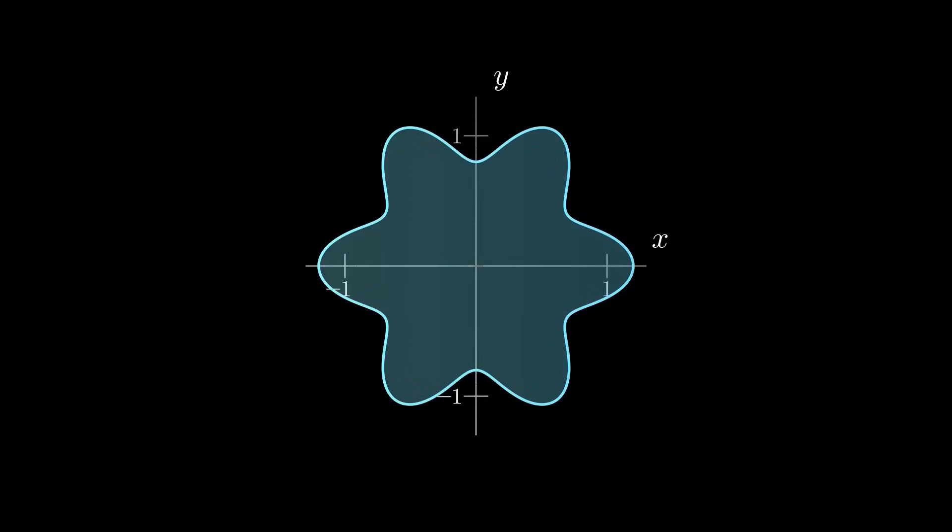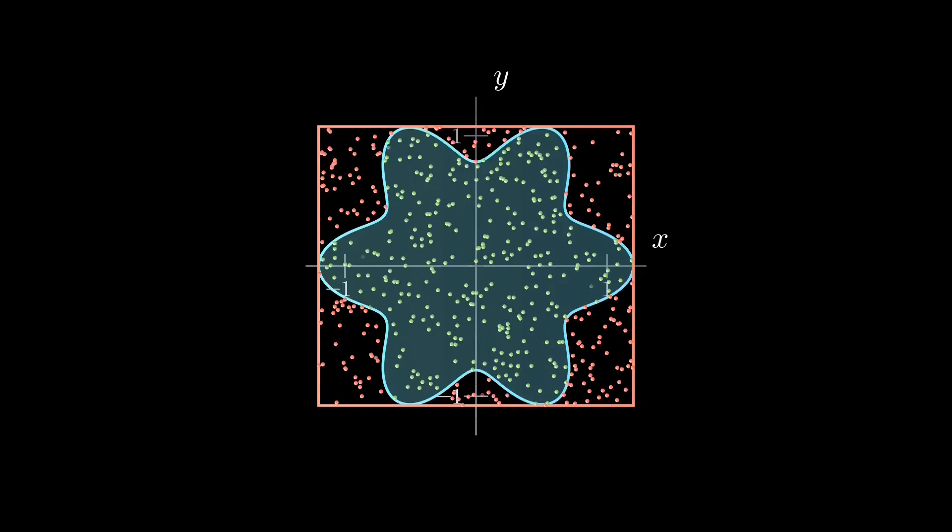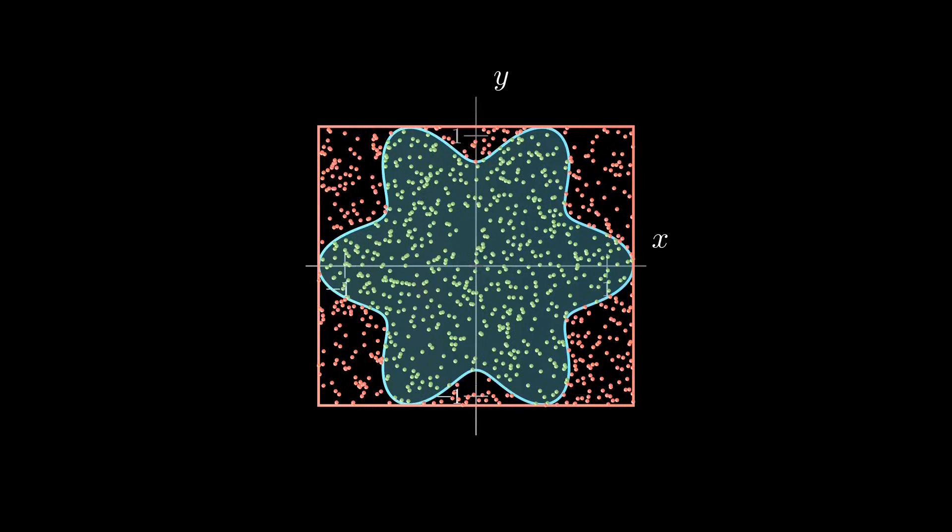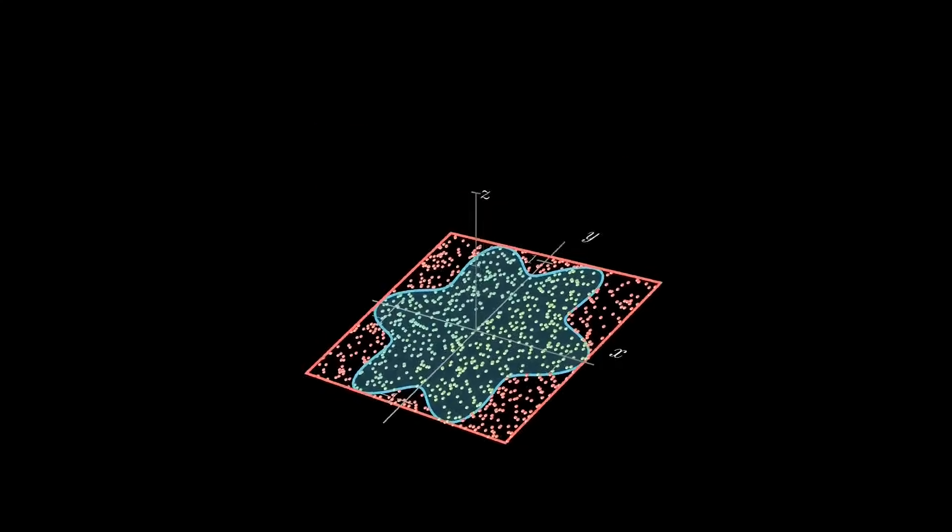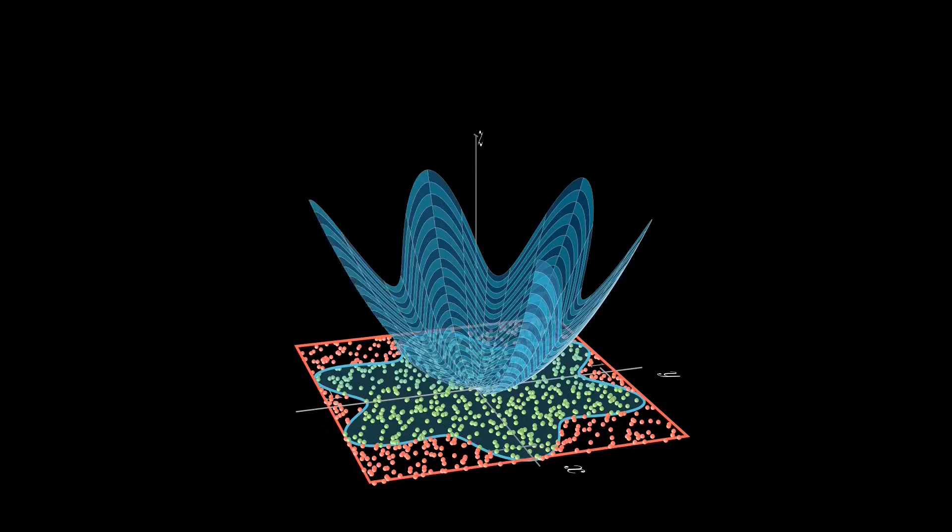Let's apply this idea to our starfish-like domain. To begin with, we wrap it inside a box. Now we take random samples uniformly. As an example, we will take x squared plus y squared as our function f.